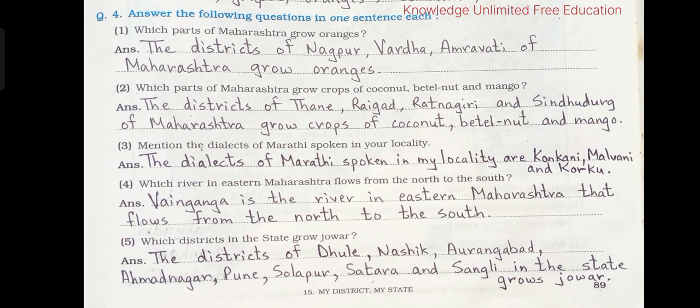5. Which districts in the state grow jawar? The districts of Dhule, Nashik, Aurangabad, Ahmednagar, Pune, Solapur, Satara and Sangli in the state grow jawar.